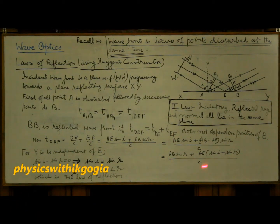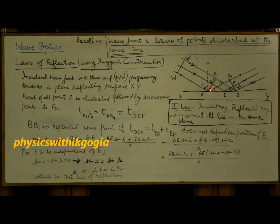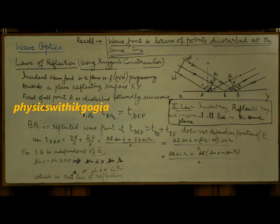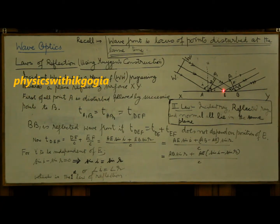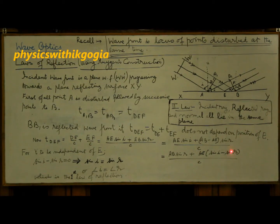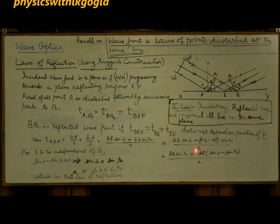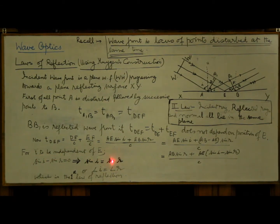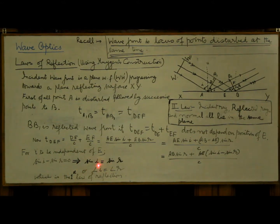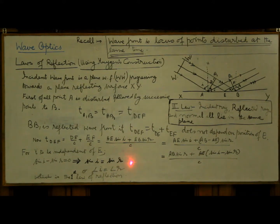This is the expression for the time taken by light to travel from D to E and then to F. This time should not depend on the position of E. For the time T to be independent of E, the coefficient of AE must be zero — that is, sine I minus sine R equals zero. This implies sine I equals sine R, or angle I equals angle R, meaning the angle of incidence equals the angle of reflection, which is the first law of reflection.